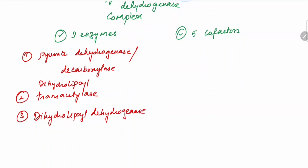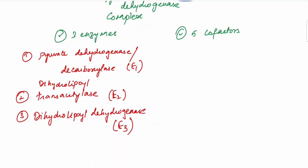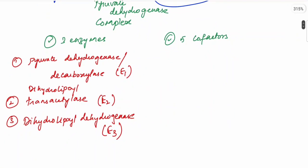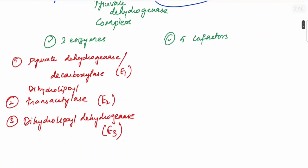The three enzymes are decarboxylase, which can be considered as E1; transacetylase, E2; and dehydrogenase, E3. E1, E2, and E3 are the three enzymes which comprise the pyruvate dehydrogenase complex. Now you have the five cofactors which are helpful in these reactions.